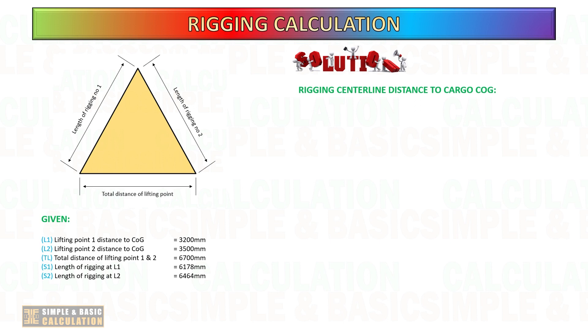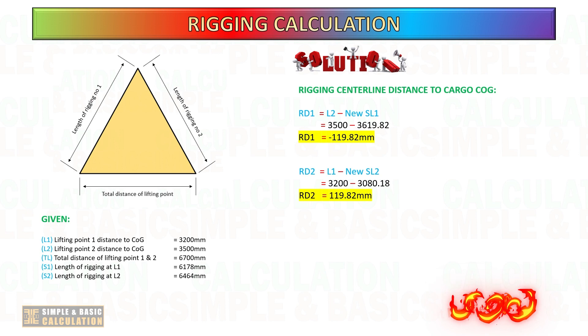Using this rigging combination, we can see that the rigging center line is around 119.82 millimeters away from the cargo center of gravity. Having this value away from cargo center of gravity, the cargo will be tilted around 1.28 degrees or one side will be up around 150 millimeters.